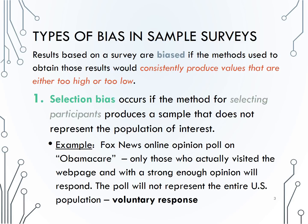Voluntary response bias occurs when we have data from everyone who volunteered to respond, like you see in online polls. When this happens, the people who volunteer their responses are usually not representative of the entire population of interest, and therefore the sampling method is biased and our statistics will not be good estimators of the parameter.